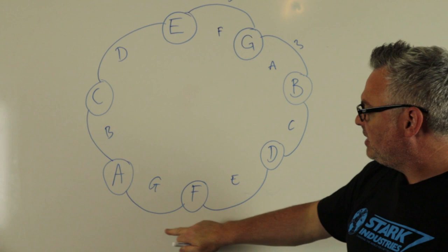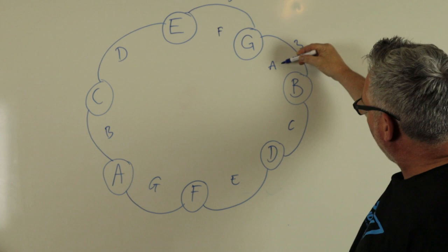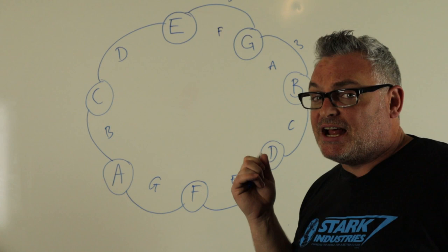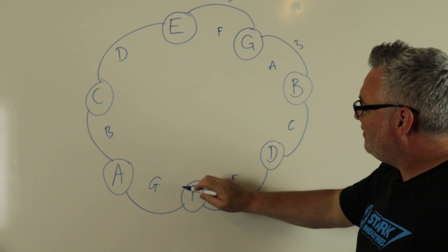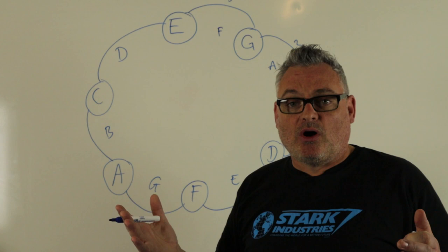By jumping up in three, we get all the way around. Worth noting: if I start on the A, the musical alphabet goes A, B, C, D, E, F, G — that's actually the natural minor scale. If we wanted to come from the C, we could go C, D, E, F, G, A, B, C — and that would be the C major scale.